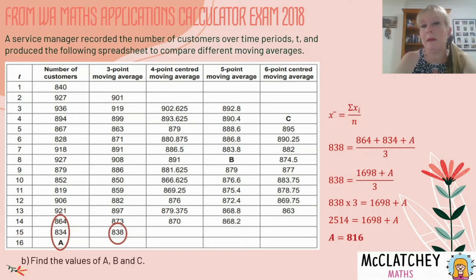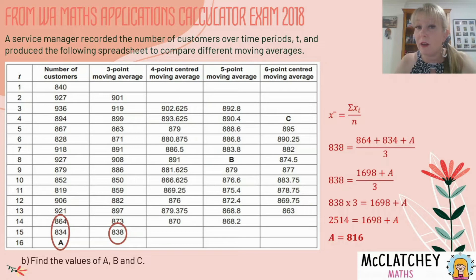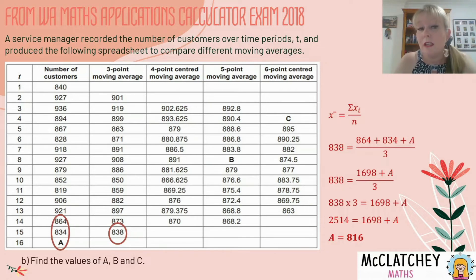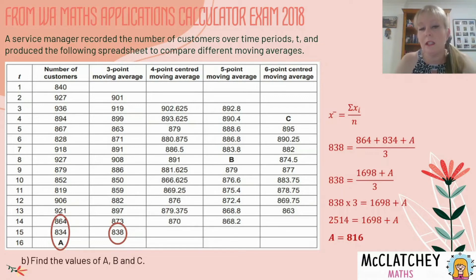We would expect the answer to be in the 800s, so if you got something like a negative number, a fraction, or 200, that would not make a whole lot of sense. You're looking for something that's similar to the data around it.